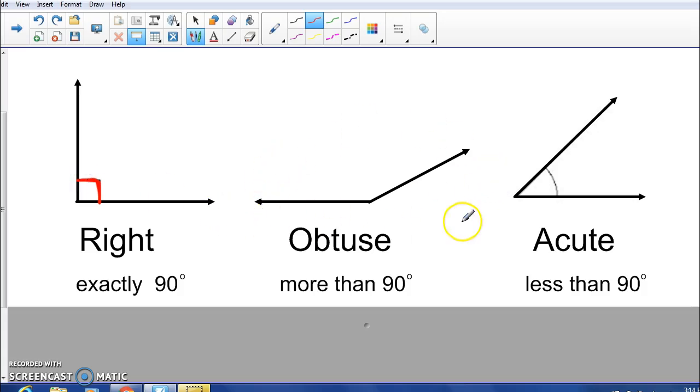Another type of angle, like the one in the middle, is called obtuse. Obtuse angles are big. They're more than 90 degrees. So if I drew a 90 degree angle in here, see how the obtuse one goes further out than that? That's how you know it's obtuse.